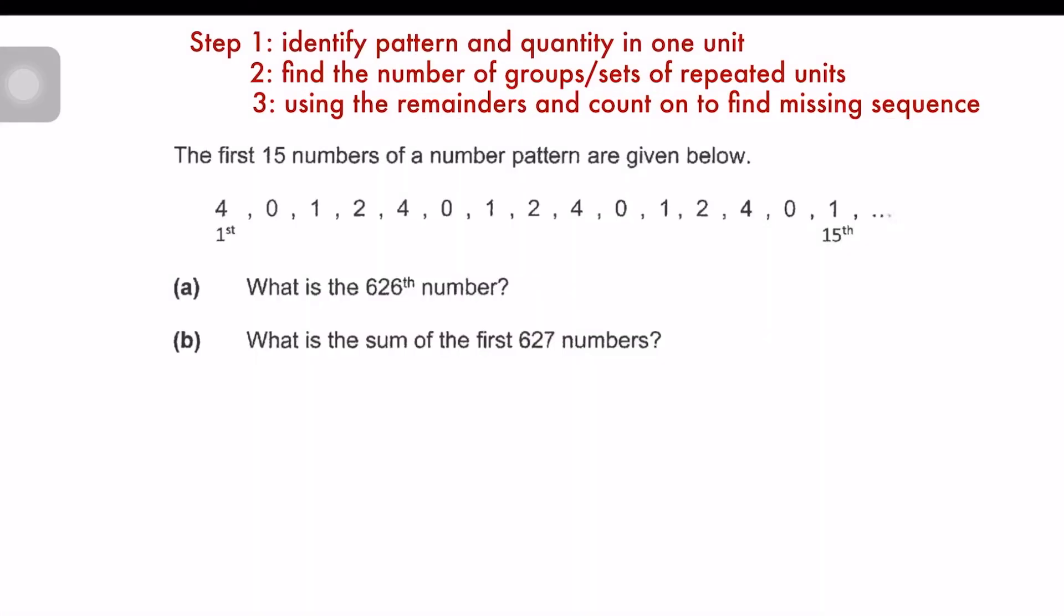Let's try the next question. Before I go through, you might want to read the question, pause the video, and attempt it first. So let's start. The first 15 numbers of a number pattern are given below. So you have 4, 0, 1, 2, 4, 0, 1, 2, 4, 0, 1, 2. By just reading the number aloud, you can roughly tell the step 1, which is identifying the pattern. The pattern will be the first 4 numbers here. So you box it up, and you've got 1 unit. So quantity, there are 4 numbers, 4 different numbers in 1 pattern itself. So the question is, what is the 626 number?